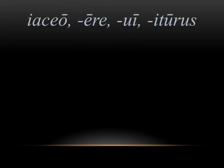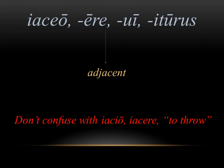The next word we want to look at is jacere. From this verb in English, we get the derivative adjacent, which makes sense — this word in Latin means to lie or to lie down. The real reason I brought this up is I don't want you to confuse this with another verb we've seen, jacere/jacere, which means to throw. The key difference is that in the infinitive, to lie down has a long e, so it's jacere, while to throw is a short e, third conjugation, jacere. Just don't confuse the two.